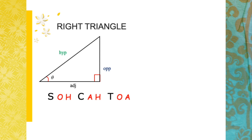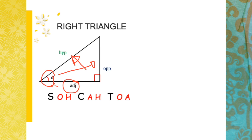The hypotenuse is the longest side and is always opposite the right angle. The opposite and adjacent sides always refer to another angle other than the 90 degrees. So if the reference angle is from this side, then this will be its adjacent, and opposite to that angle will be its opposite side.